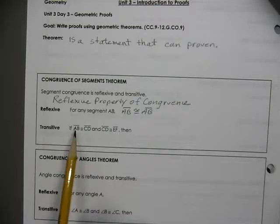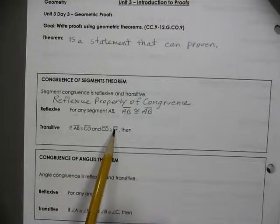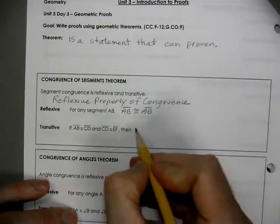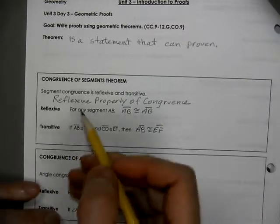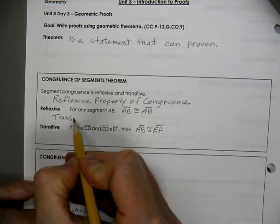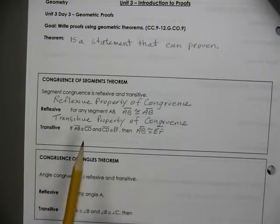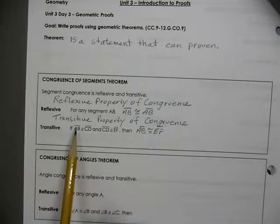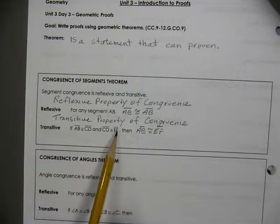Now the transitive property: if you have two items that are congruent and that item is congruent to something else, then we can say that the first is congruent to the third — that AB is congruent to EF. This is the transitive property of congruence. When we recognize that one segment is congruent to another, and that segment is congruent to another, we can say that the first segment is congruent to the third.